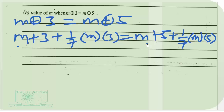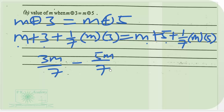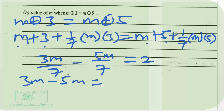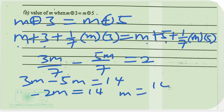M minus M gives 0, and 3 minus 5 gives -2. We have 3M/7 minus 5M/7 = 5 - 3 = 2. Multiplying through by 7 gives 3M - 5M = 14, so -2M = 14, therefore M = 14 / -2 = -7. The value of M is negative 7.